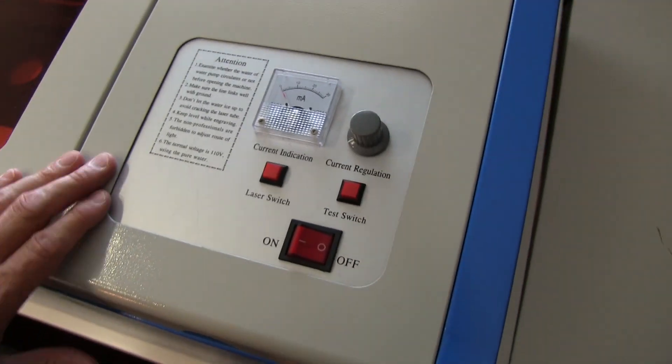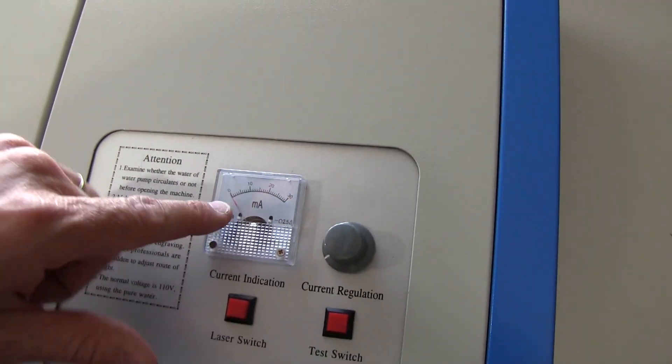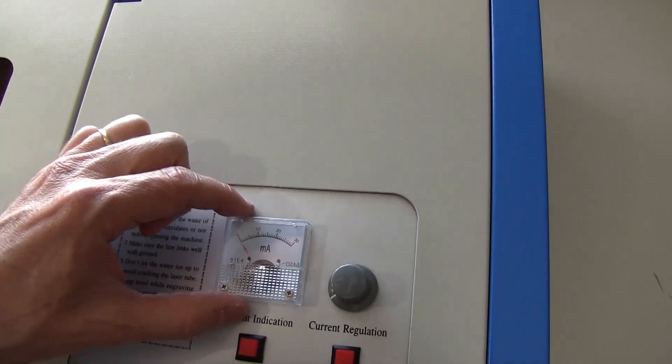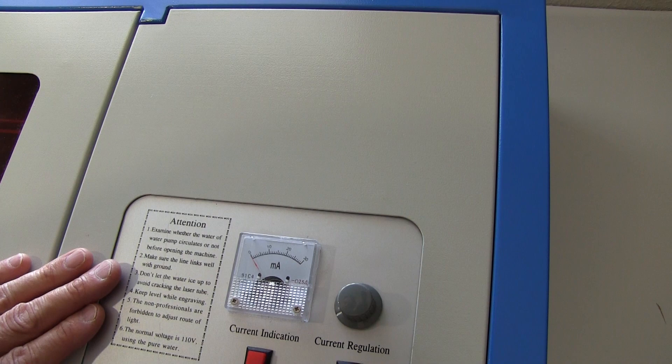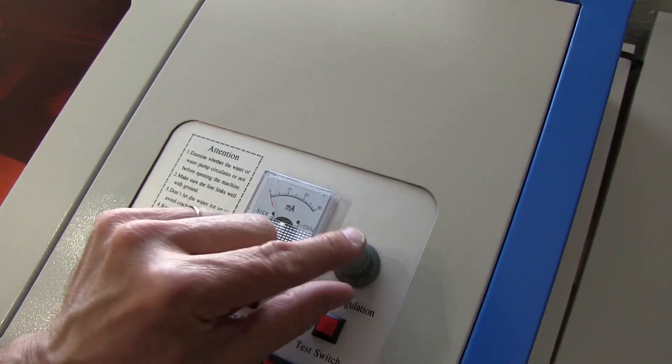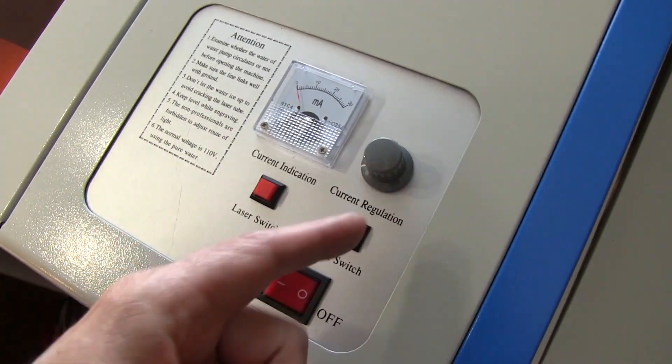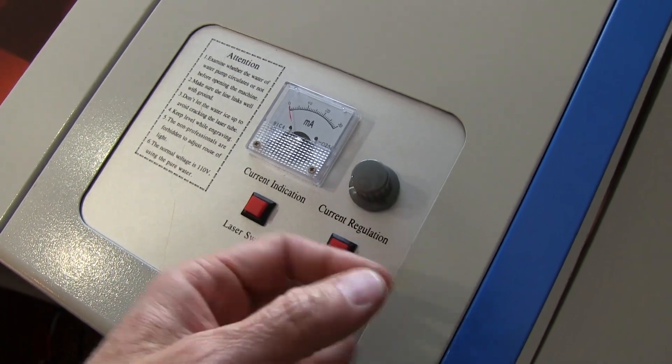It's very simple, very basic. I mean, look at this. There is your amp meter. This looks like a VA meter from my dad's old 8-track tape deck or something. And this is the knob that controls the power of the laser, which cracks me up.